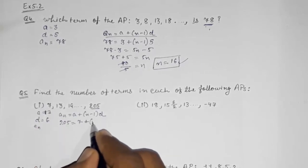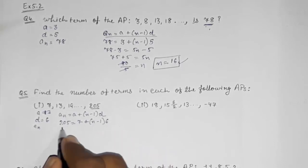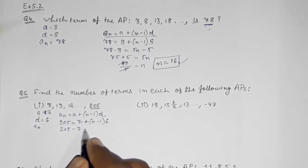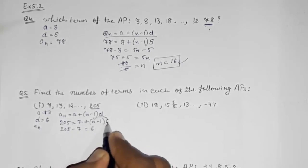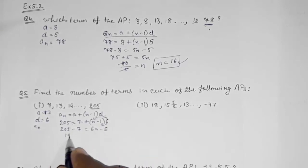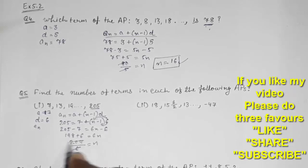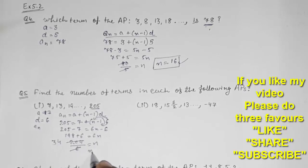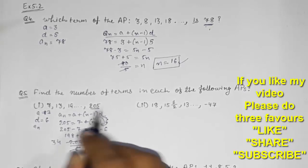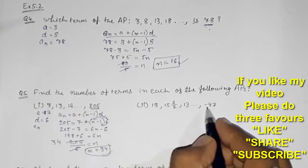So 205 = 7 + (n − 1) × 6. Taking 7 to the other side: 205 − 7 = 6(n − 1), giving 198 = 6n − 6, so 198 + 6 = 6n, which means 204 ÷ 6 = n, giving n = 34. So there are 34 terms in this AP.